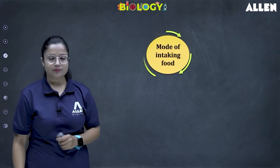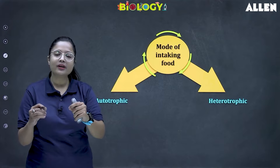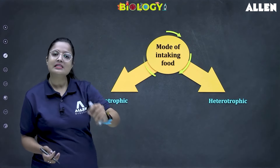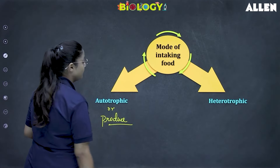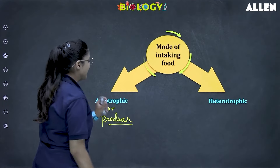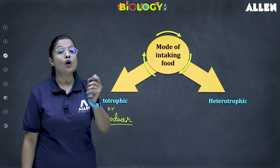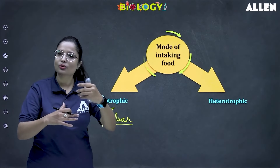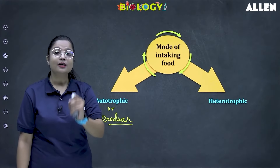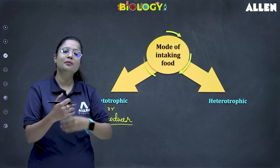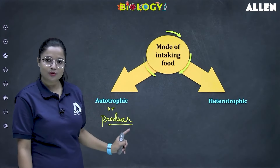Moving to mode of intaking food. How many modes of intaking food are there? Two — autotrophic and heterotrophic. There are some creatures on this planet who can create their own food, who can manufacture their own food. Such are termed as autotrophic, or you can call them producers. Plants are producers — we get rice, pulses, cereals, oil, fruits, and vegetables from them. They are autotrophs. Can we synthesize our own food? No — we acquire food from plants and consume it. So there are some who can produce food — those are called producers or autotrophs.